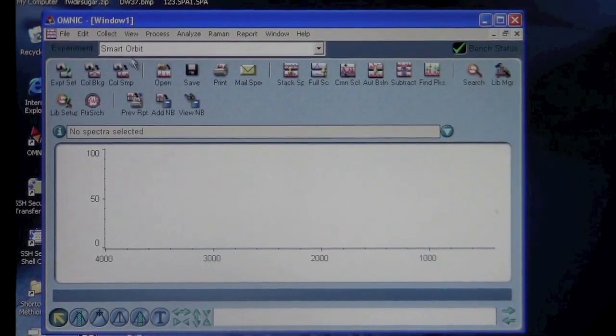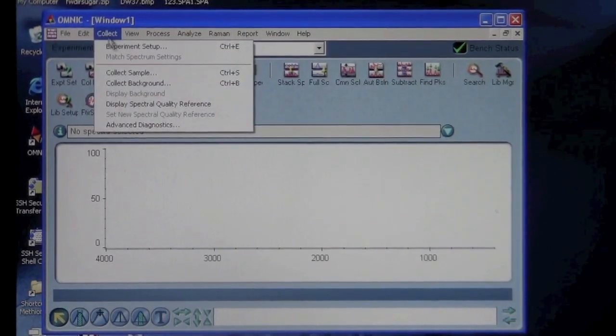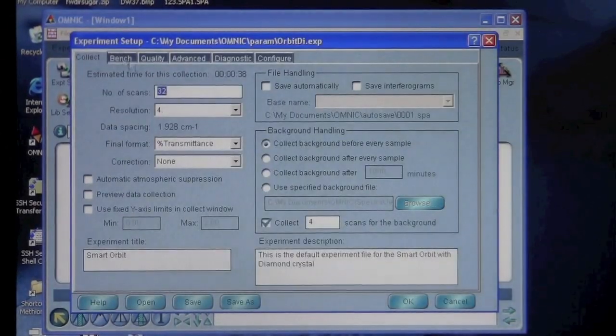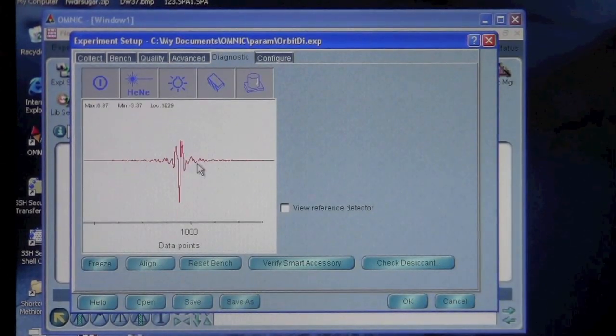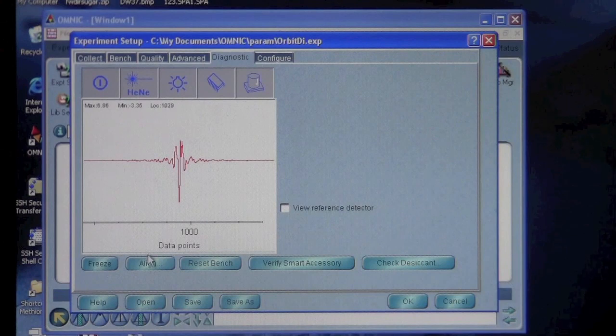The first thing you want to do is go to Collect and Experiment Setup, and you can come over to this Diagnostic tab. You should see a signal. One thing you can do, which I'm not going to do right now, is click Align and it will automatically align the optics for maximum signal.